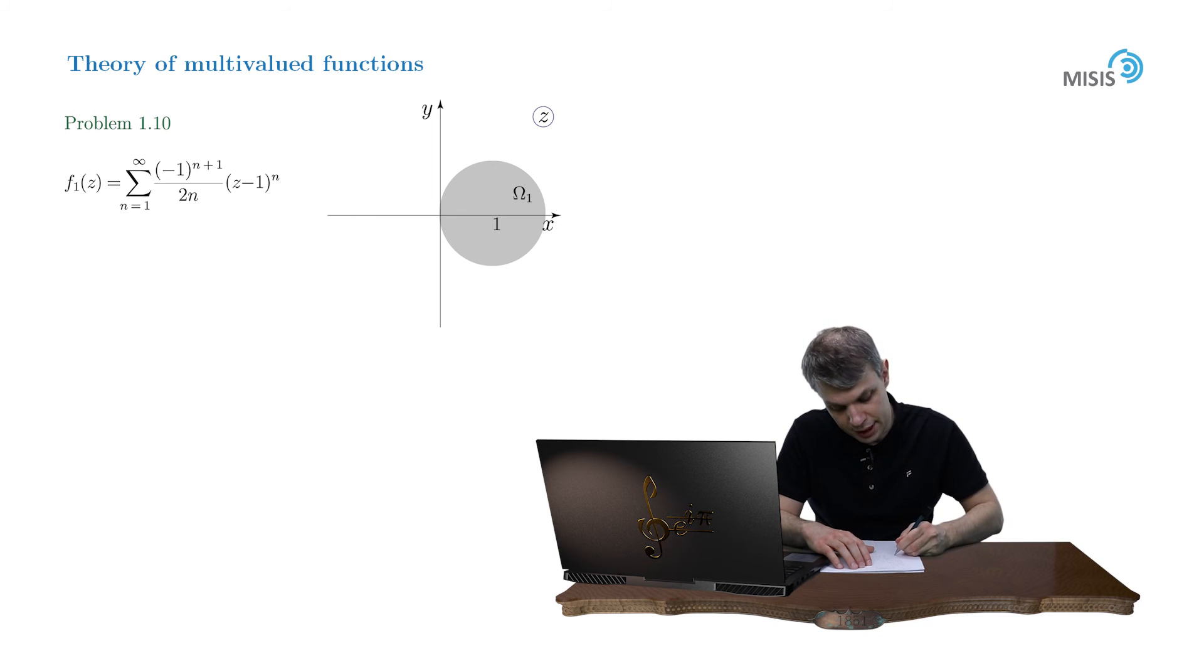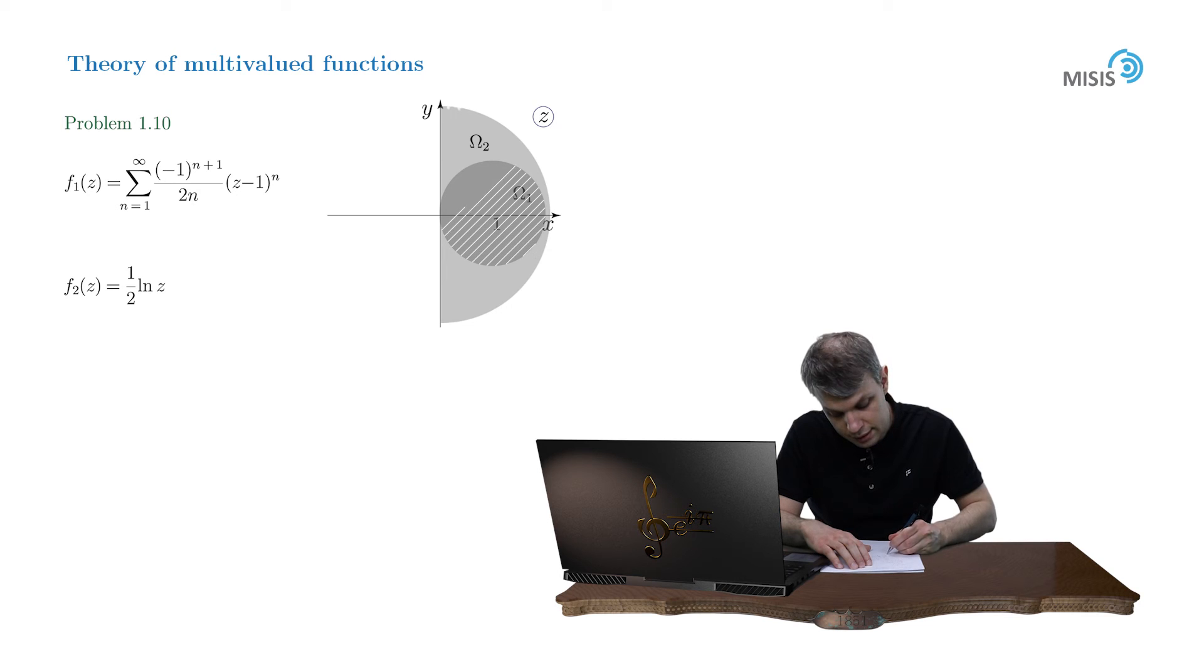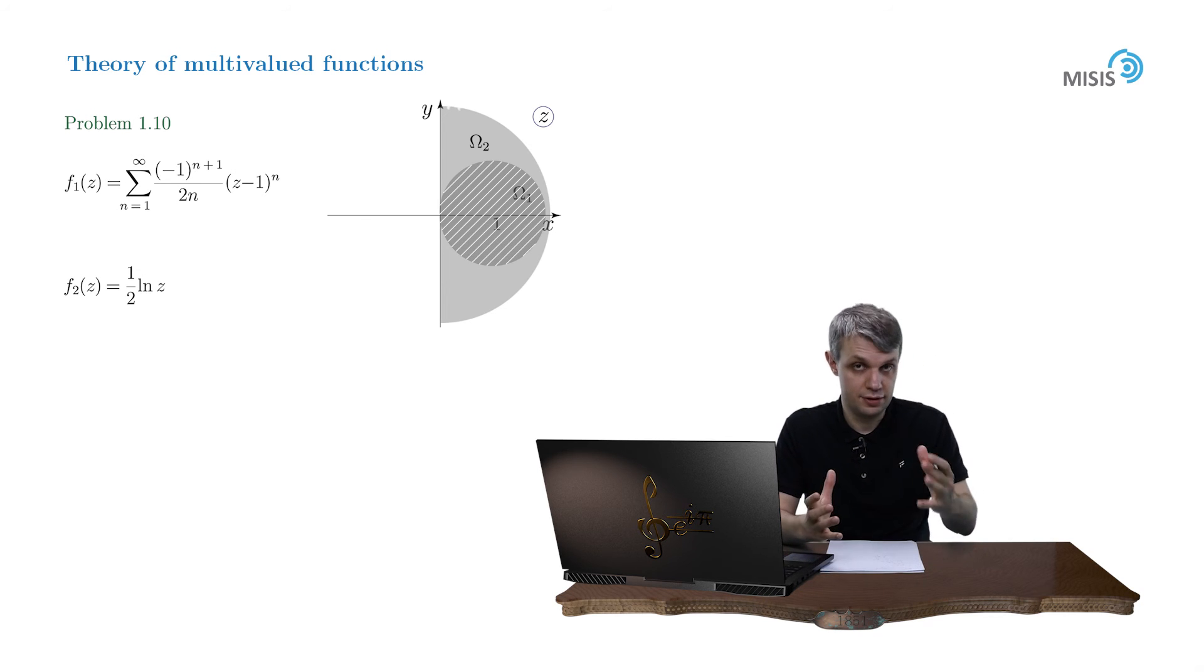Now let's consider another function f₂ of z equals one half of logarithm of z on right complex semi-plane with imaginary axis excluded. Let's call this domain Ω₂. And the intersection of these two domains is equal to Ω₁, the unit disk. Function f₂ coincides with function f₁ inside the unit disk because again f₁ is a converging Taylor series of f₂ on this unit disk.